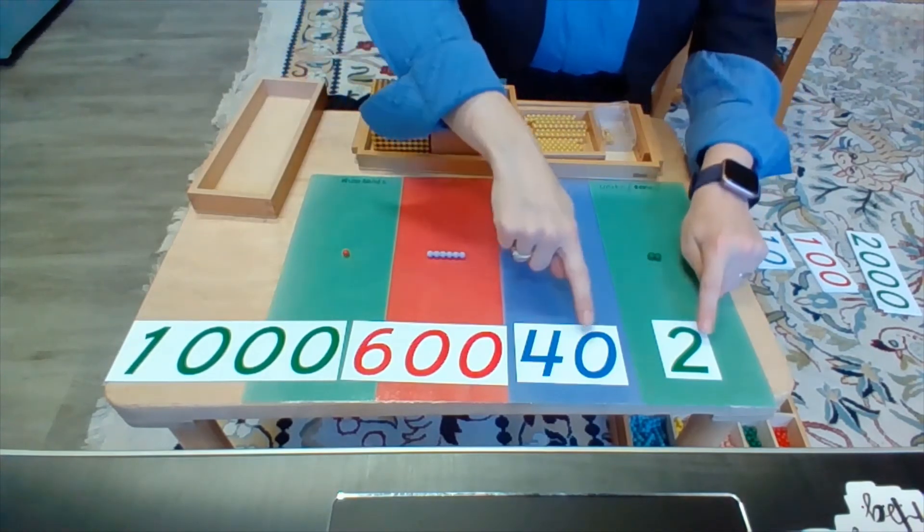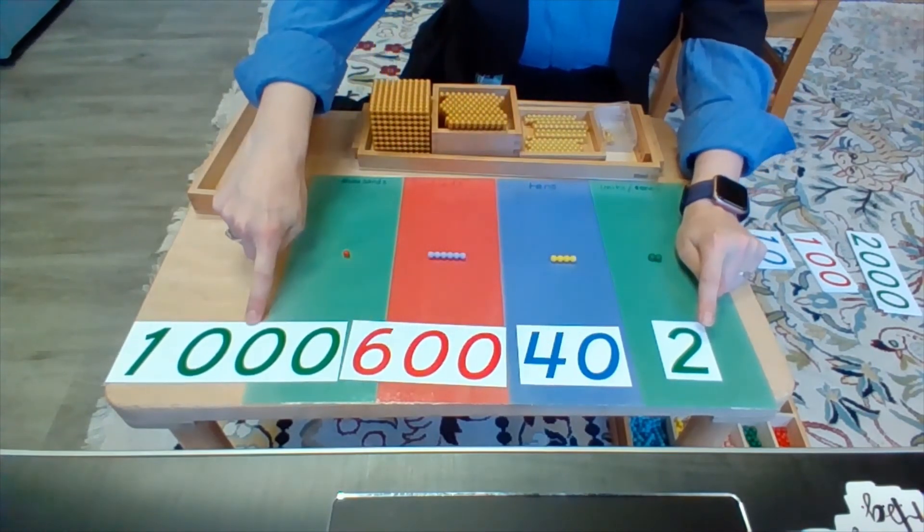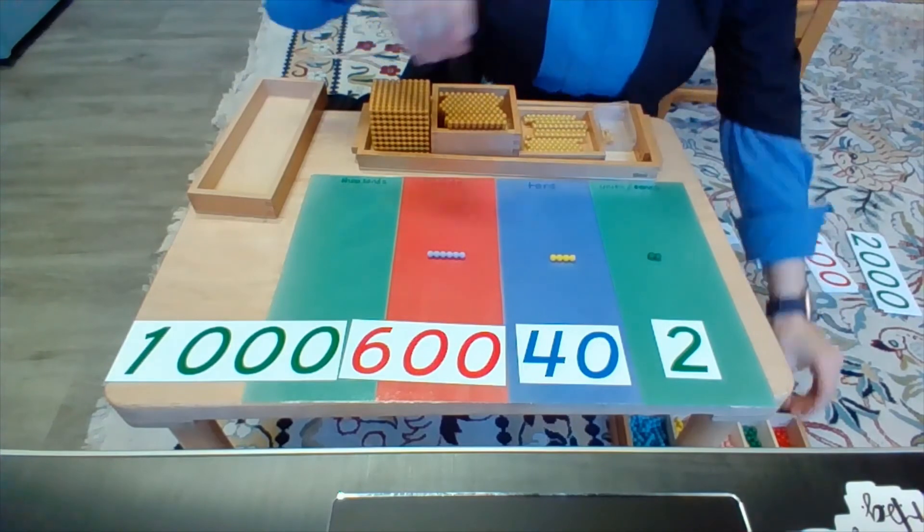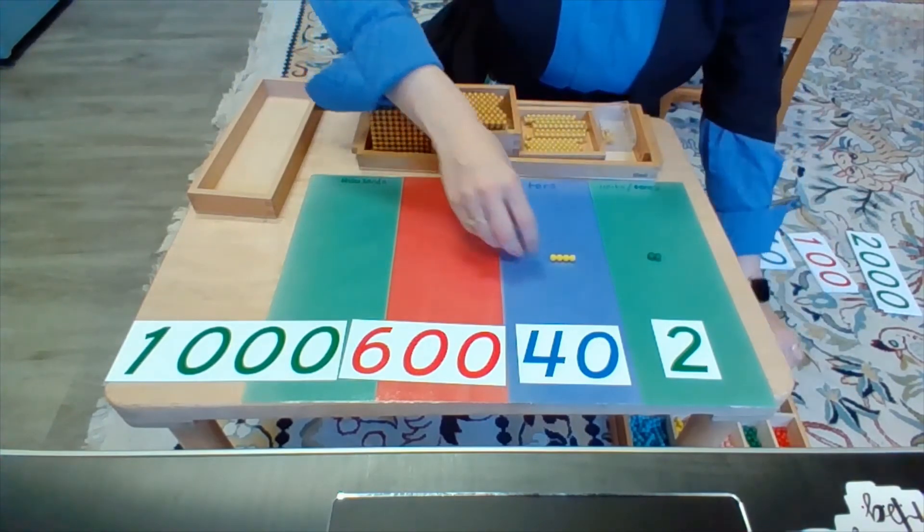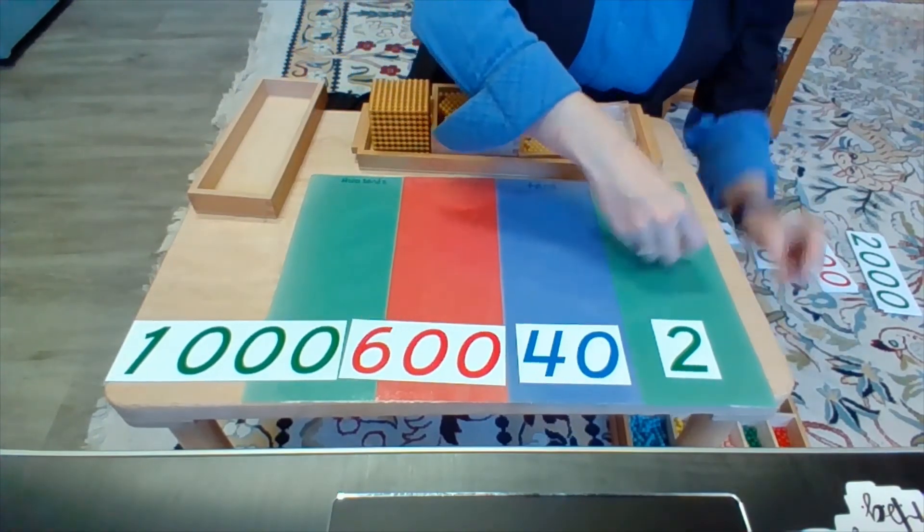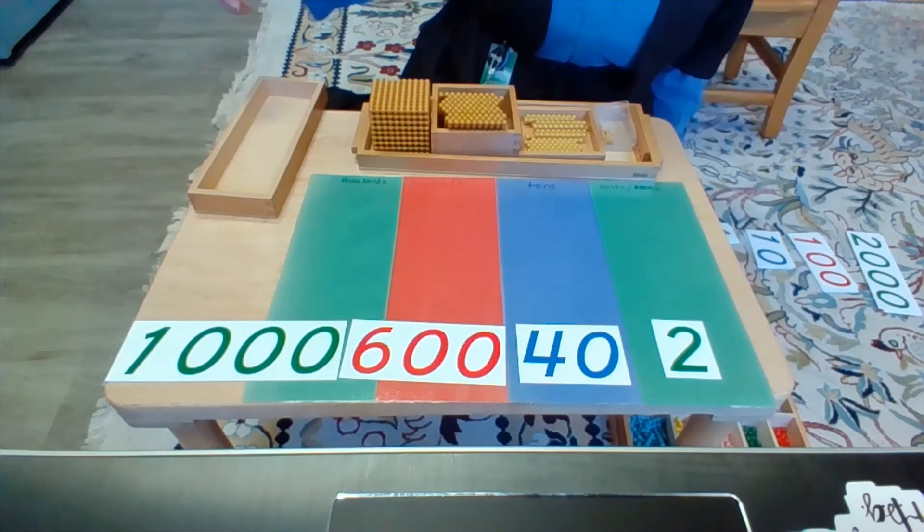So when I have my number all spread out like this, we refer to that as expanded notation, because I have expanded the number.